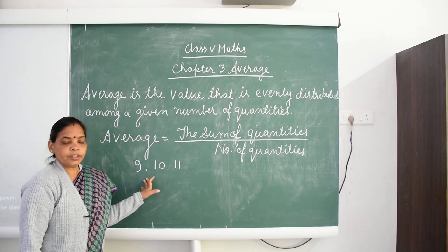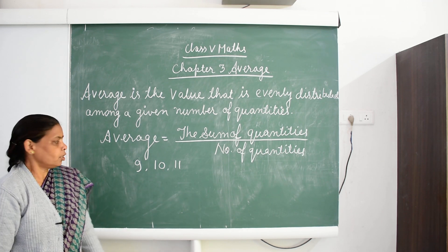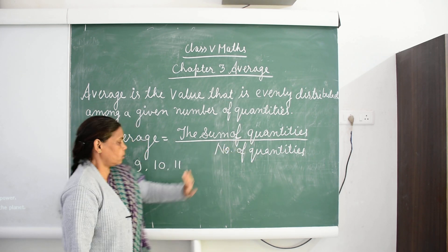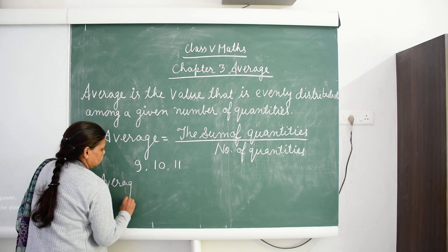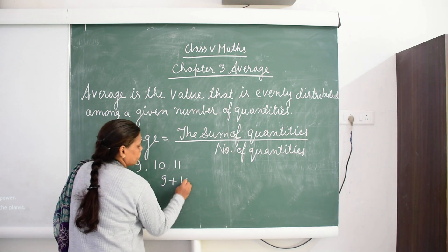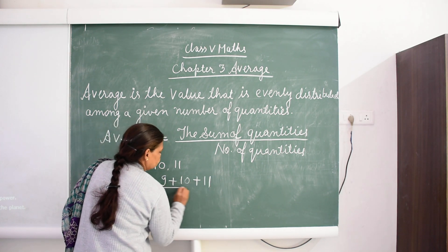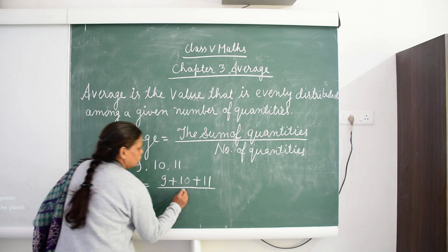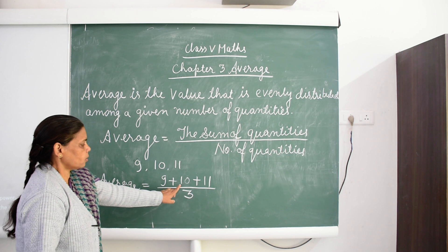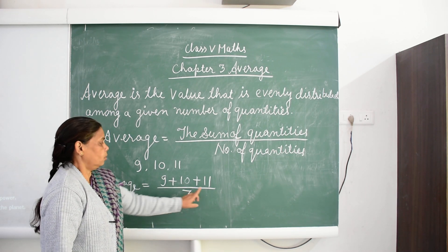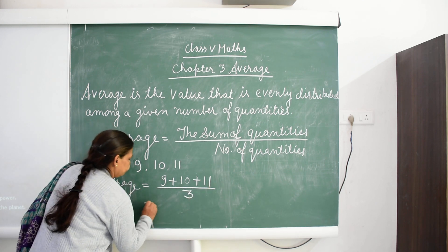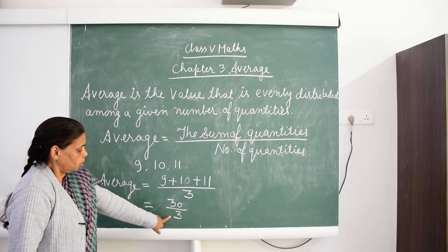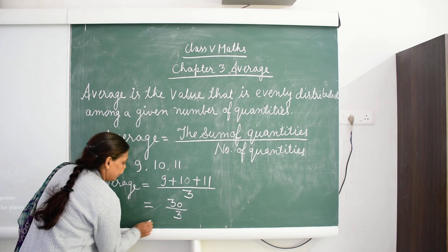So how do we find the average age of Class 5 students? We apply the formula: sum of quantities. Sum means plus. So average is equal to 9 plus 10 plus 11, upon the number of quantities. There are 3 quantities. 9 plus 10 is 19, 19 plus 11 is 30. 30 upon 3, and we divide 30 by 3, so we get 10 years.